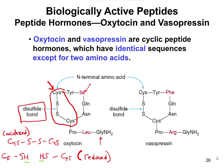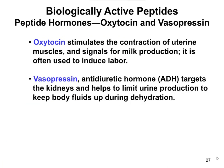Oxytocin and vasopressin are very similar to each other. Going back to the physiology, the only difference between them is isoleucine and leucine in oxytocin versus phenylalanine and arginine in vasopressin. Other than those two amino acids, they are identical to each other. You might ask: what's the big difference between having just two different amino acids?